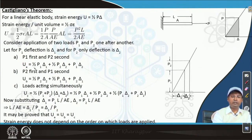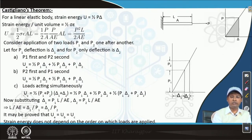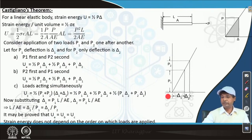In the first case, P1 applied first then P2: energy is half P1 delta1. When P2 comes next, displacement delta2 gives half P2 delta2, but P1 remains in the system so work done by P1 equals P1 delta. Similarly, for P2 first and P1 second: half P2 delta2 for the first, half P1 delta1 for the second, and then P2 remains so it contributes P2 times delta1. For loads acting simultaneously, P1 plus P2 creates displacement delta1 plus delta2.